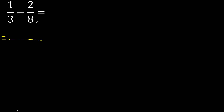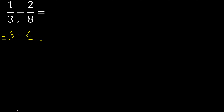First multiply like this: 8 multiplied by 1 is 8, minus 3 multiplied by 2 is 6, 3 multiplied by 8 is 24.